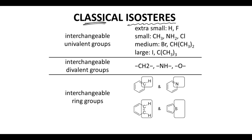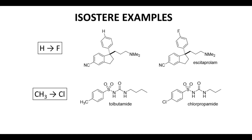Classical isosteres interchange groups of similar size. Here are two examples of classical isosteres. In the first example, we are replacing a hydrogen with a fluorine. Acetoprolam, which is on the top right, has a fluorinated benzene ring. This fluorine was likely added because the corresponding non-fluorinated ring likely underwent phase one oxidation, which would reduce the half-life of the molecule, so blocking that oxidation was important.